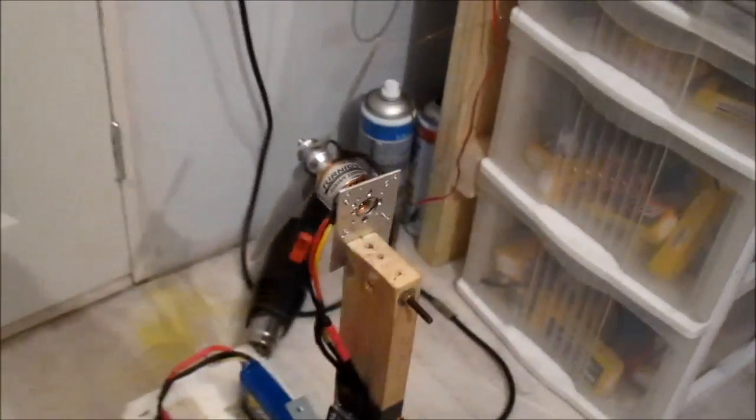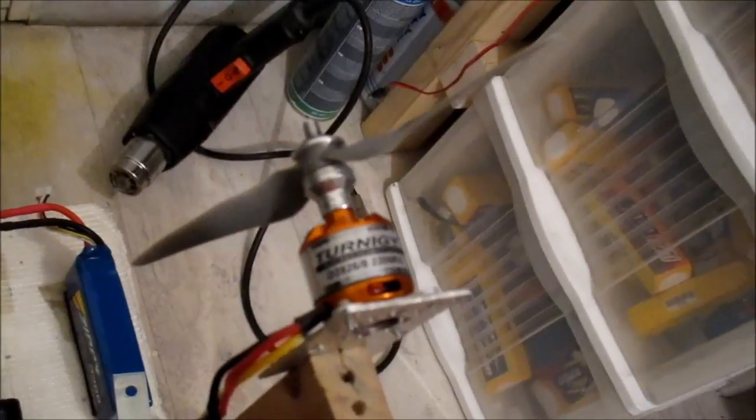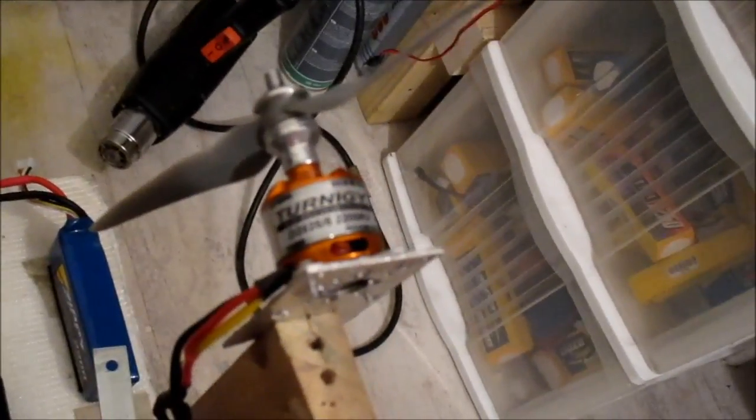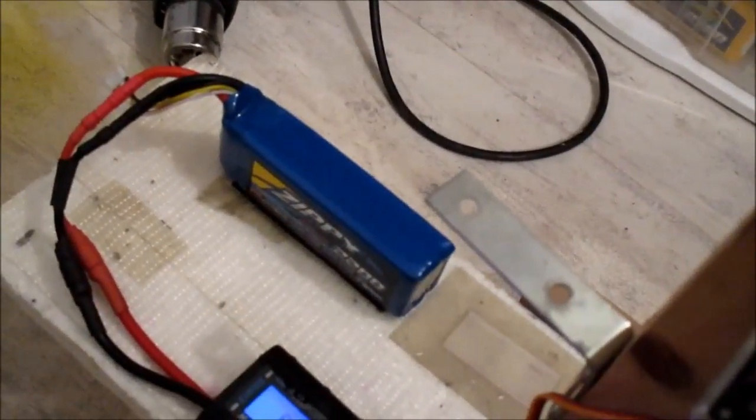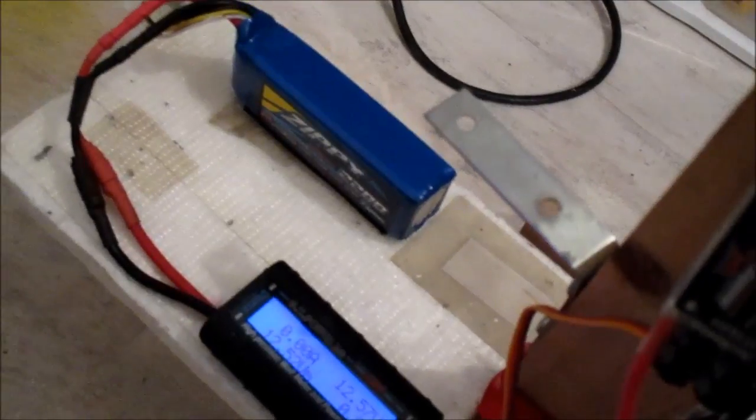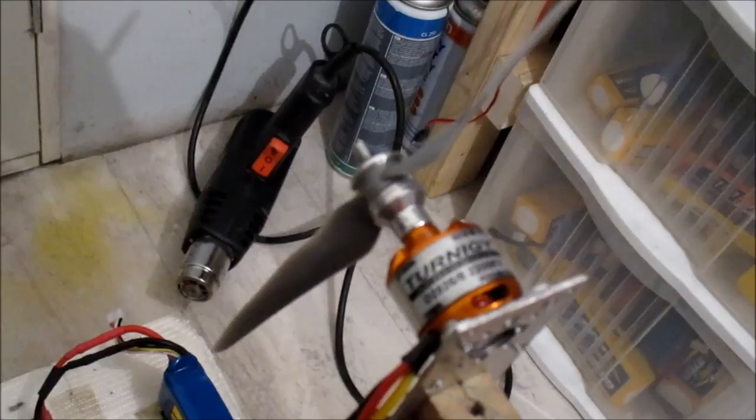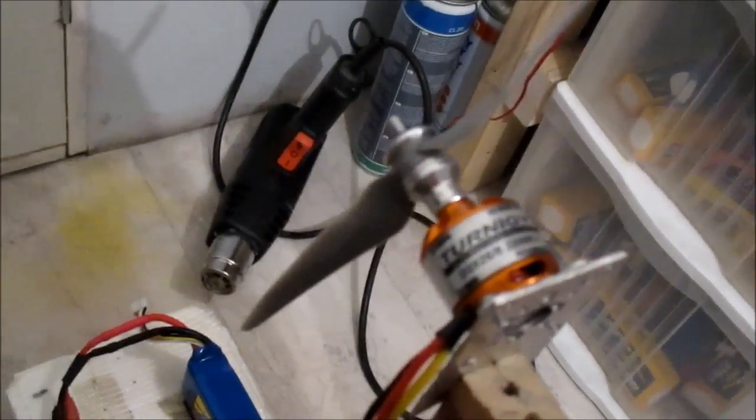Hello, motor test of the week time. This week I will be featuring the Turnigy 28 26-6 2200KV motor, one of the most popular motors. Got it on a Zippy 40C 3-cell 2200mAh battery, and the prop I am starting off with is an APC 6x4 electric prop.